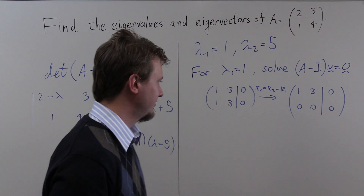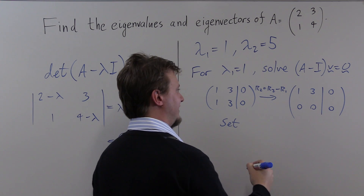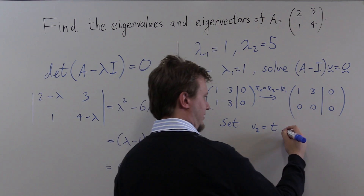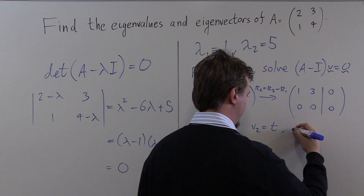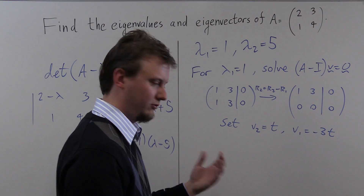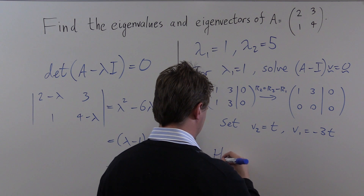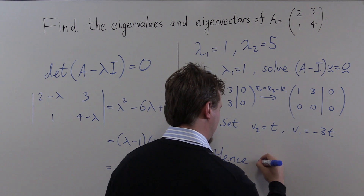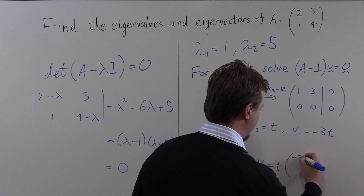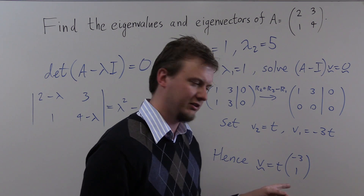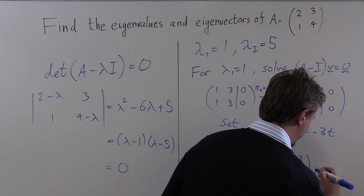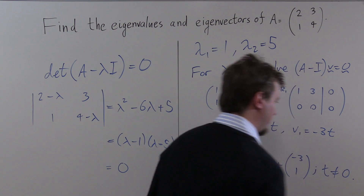Back substituting, we set the second component v₂ equal to a parameter t. Solving gives v₁ equal to minus 3t. So our eigenvector is t times the vector (−3, 1). Note that eigenvectors are never zero vectors, so we restrict to t not equal to zero.